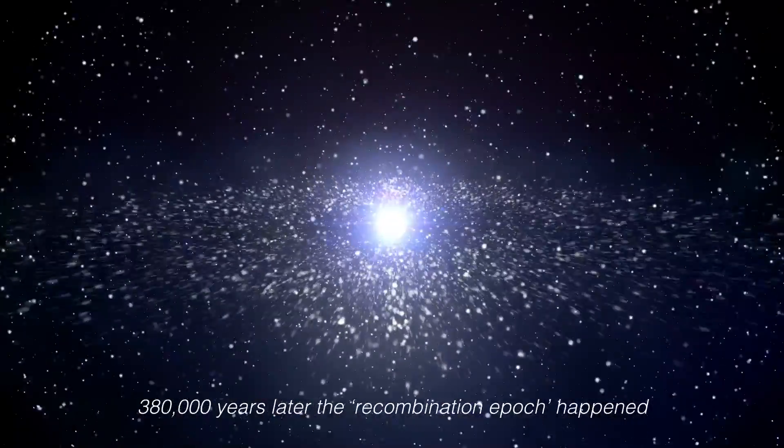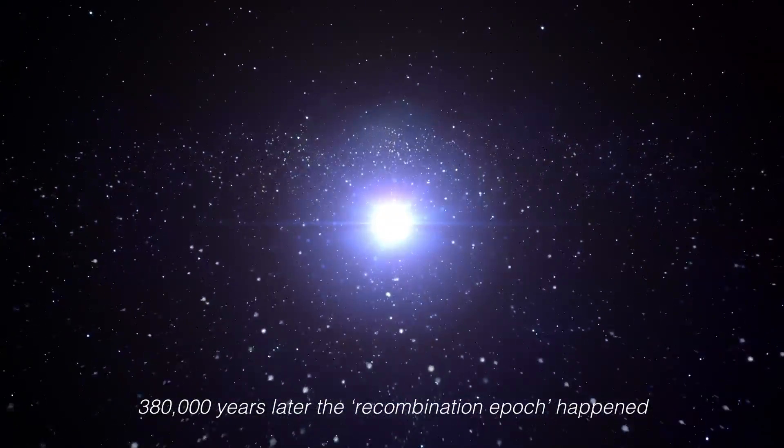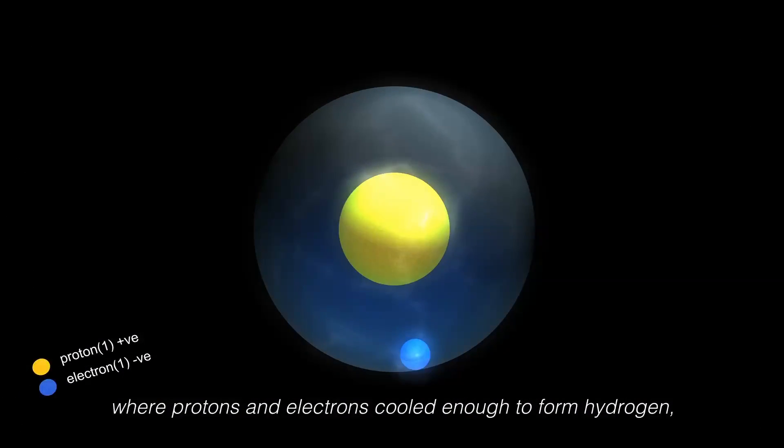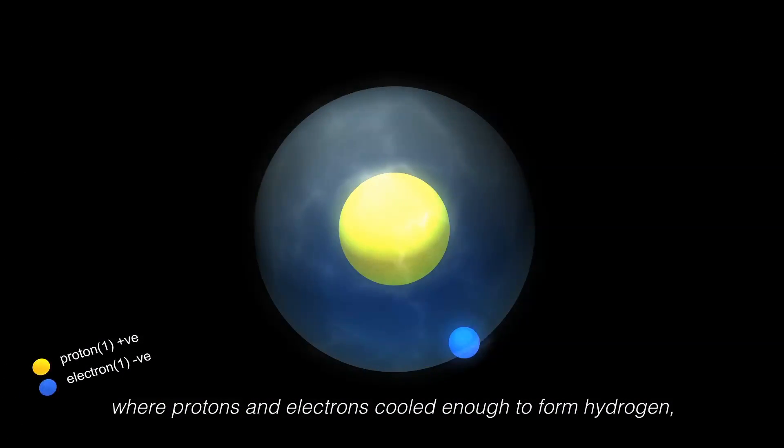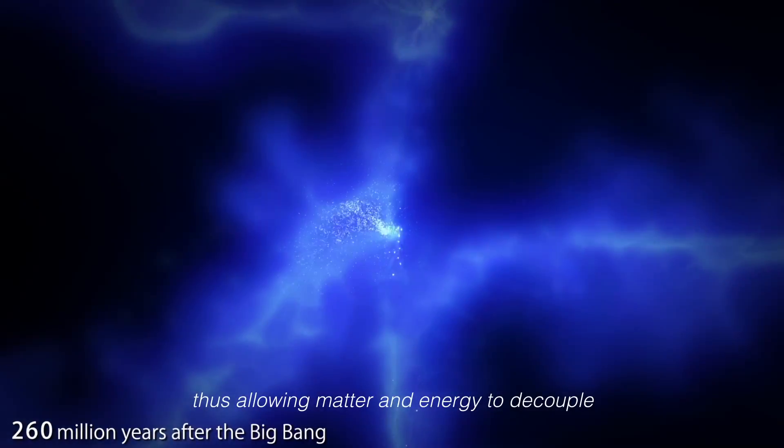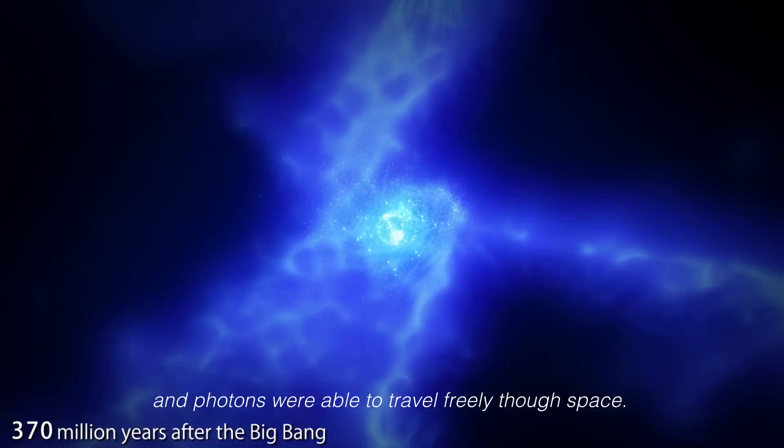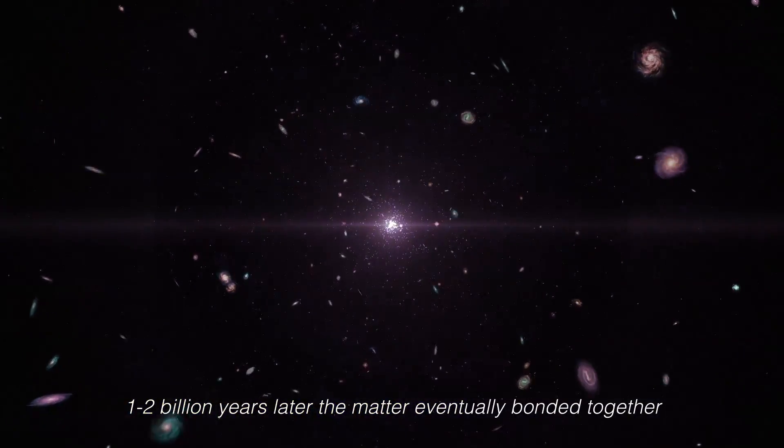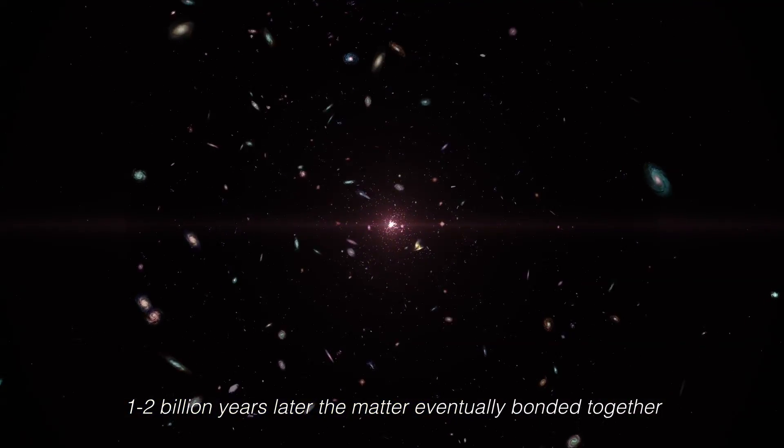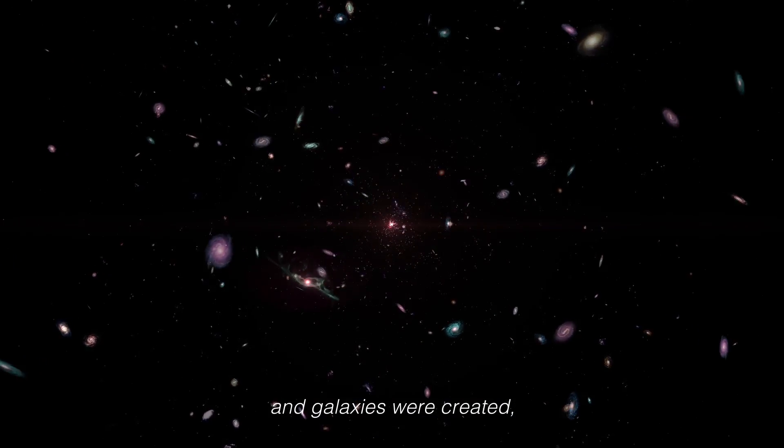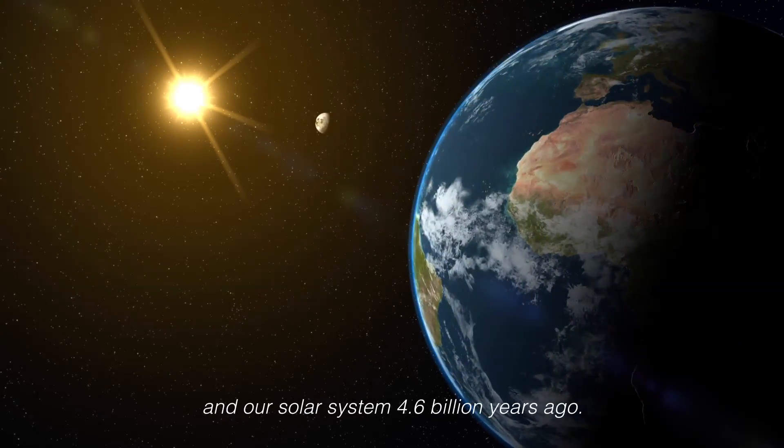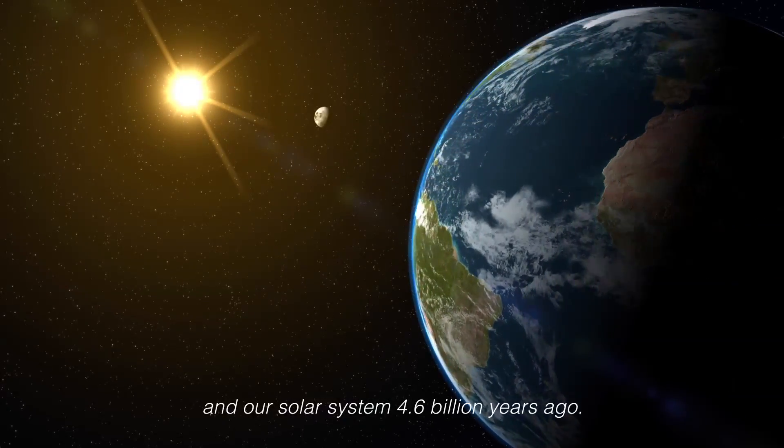380,000 years later, the recombination epoch happened where protons and electrons cooled enough to form hydrogen, thus allowing matter and energy to decouple and photons were able to travel freely through space. 1 to 2 billion years later, the matter eventually bonded together and galaxies were created, and our solar system 4.6 billion years ago.